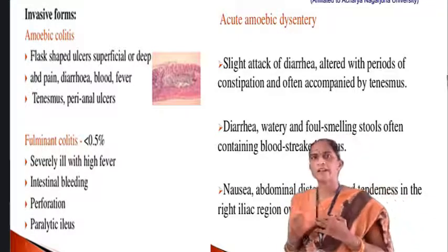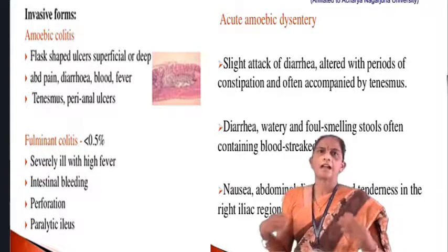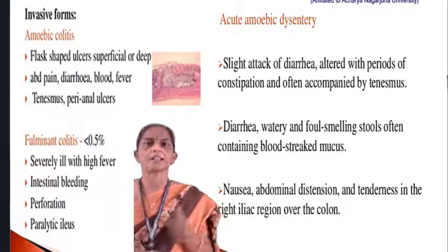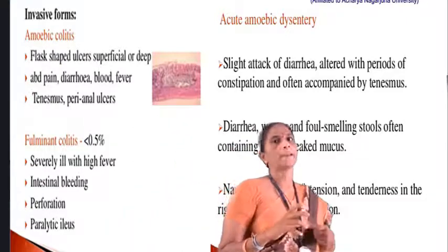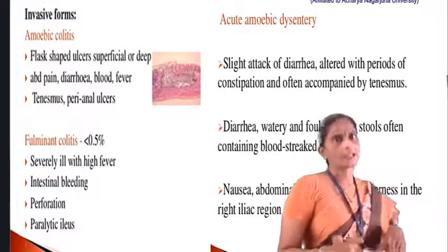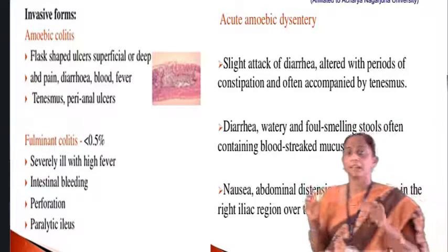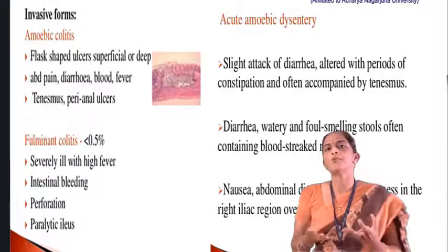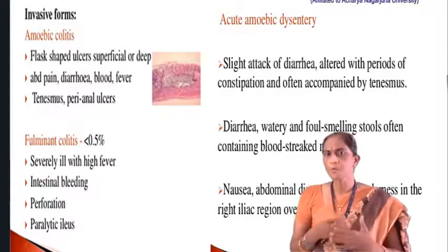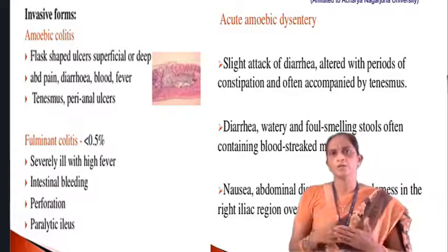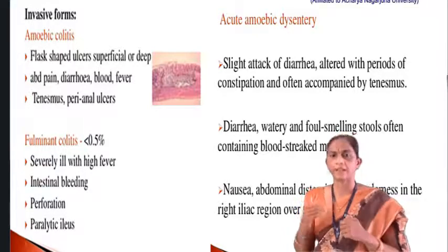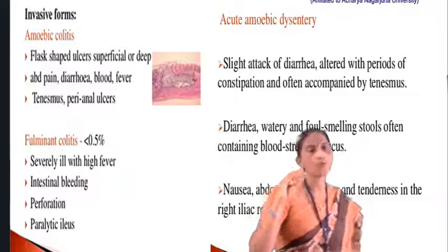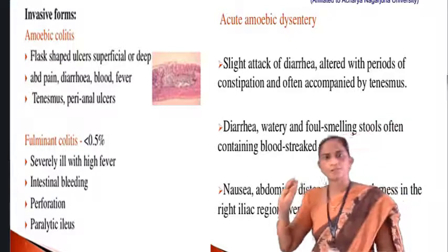Amoebiosis mainly attacks the intestine and causes flask-shaped ulcers in superficial or deep layers of the intestine. Symptoms include abdominal pain, diarrhea, blood in stool, fever, and tenesmus. Tenesmus means a continuous feeling of needing to release stools. There are also perianal ulcers and pain during defecation. The main symptom is viscous diarrhea along with blood, which is called amoebic dysentery.